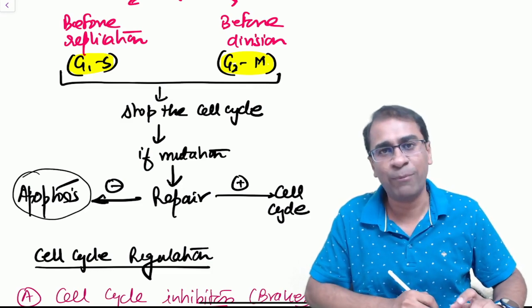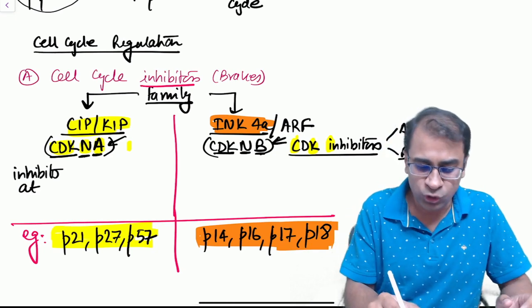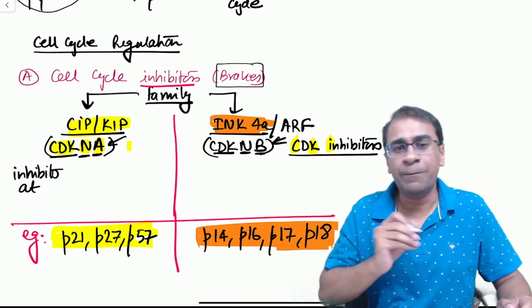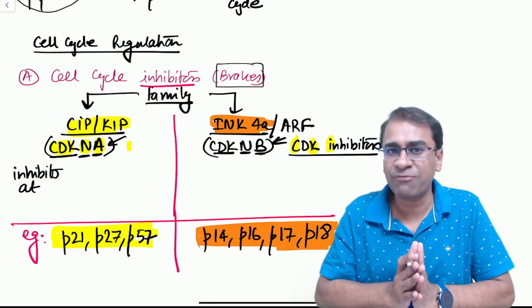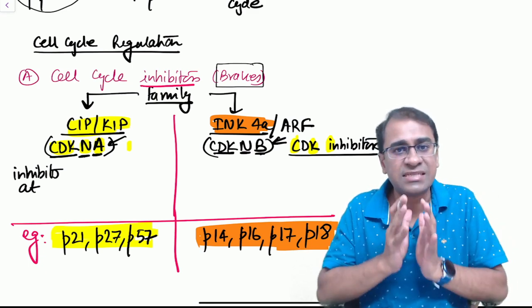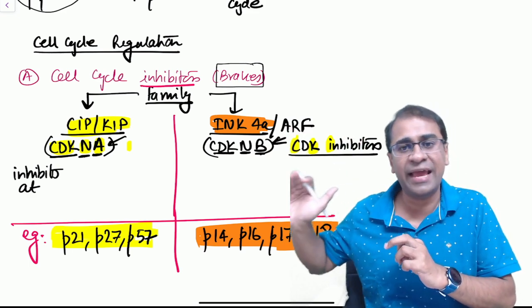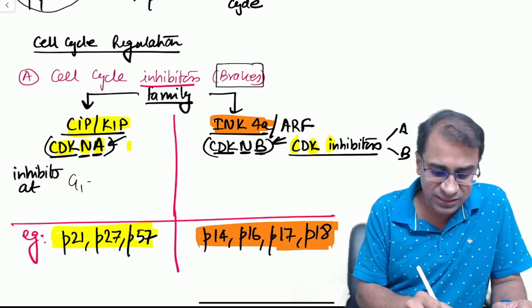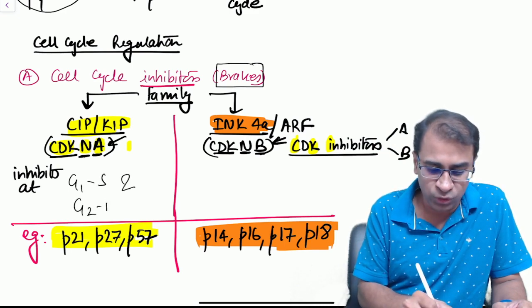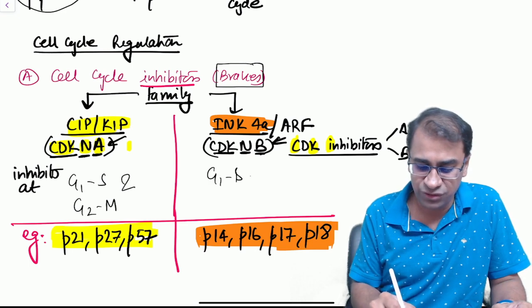Cell cycle inhibitors, also called brakepoints of a cell. The brakes are a family: CIP/KIP and INK4A. The CIP/KIP family also called CDKN1A, while INK4 is called CDKN2. The inhibition of CIP/KIP is at G1-S and G2-M both, whereas INK4 is at G1-S only.